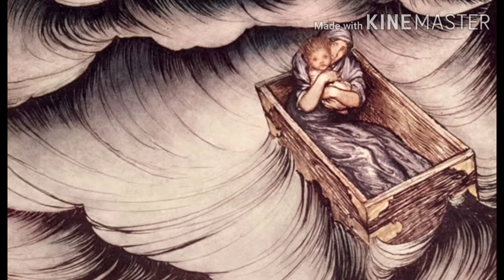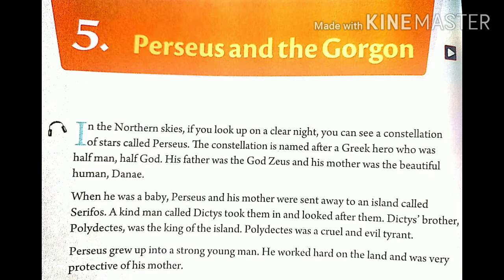Now let's enter into the lesson. Take your English textbook, page number 56. In the northern skies, if you look up on a clear night, you can see a constellation of stars called Perseus. Constellation means a group of stars. The constellation is named after a Greek hero who was half man, half god. His father was the god Zeus and his mother was a beautiful human, Danae. When he was a baby, Perseus and his mother were sent away to an island called Seraphos. A kind man called Dictus took them in and looked after them. Dictus's brother Polydictus was the king of the island — a cruel and evil tyrant. Tyrant means a ruler. Perseus grew up into a strong young man who worked hard and was very protective of his mother.